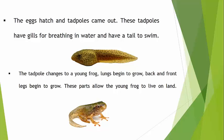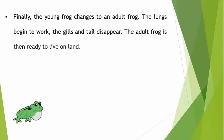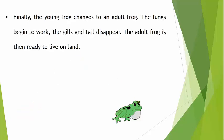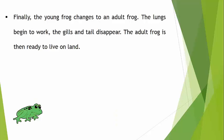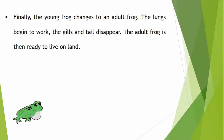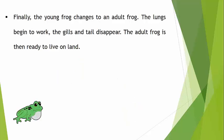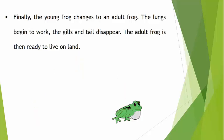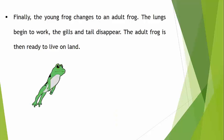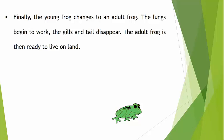The next and last stage is when the young frog finally changes into an adult frog — a mature, complete frog. The lungs begin to work fully, and the gills and the tail disappear. The adult frog is then ready to live on land.